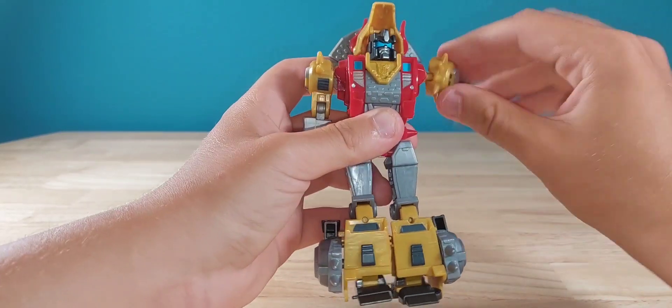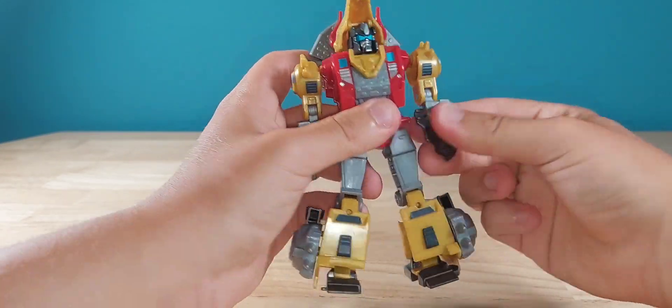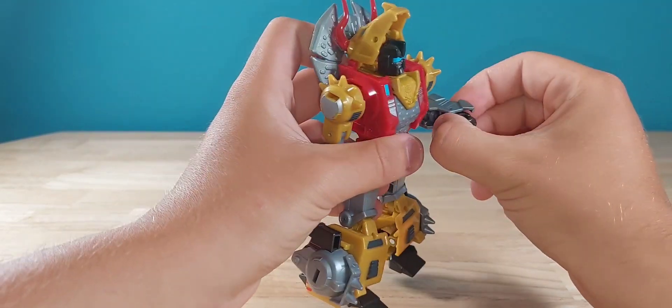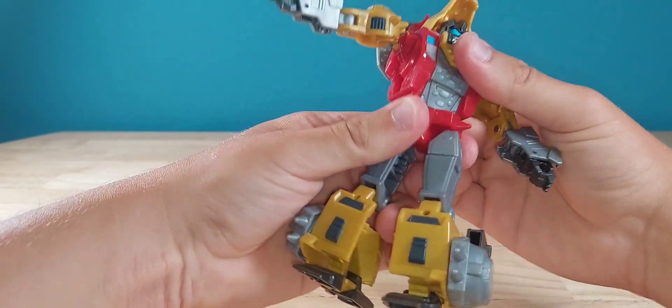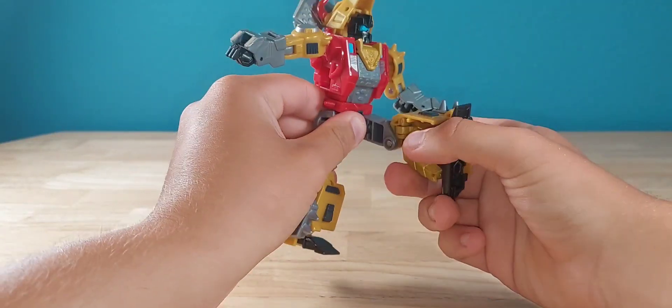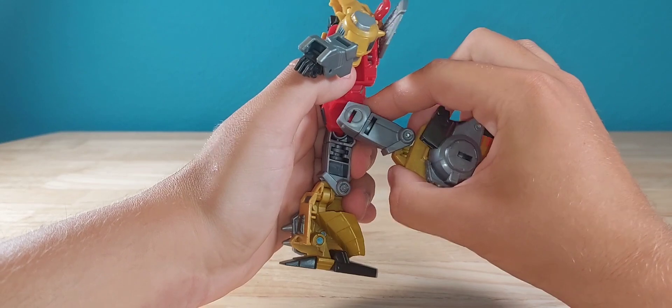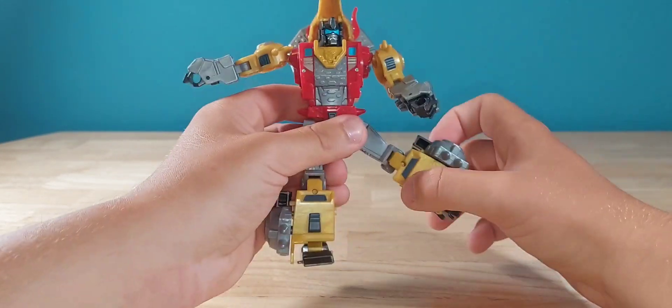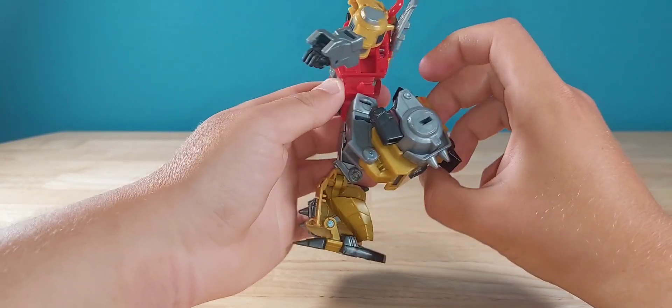For the arms, you can do a full 360, outward that far. He gets bicep rotation, 90 degrees of elbow bend, and the wrist can move in and out. He gets waist rotation. Legs can go forward that far, back and about that far outward.